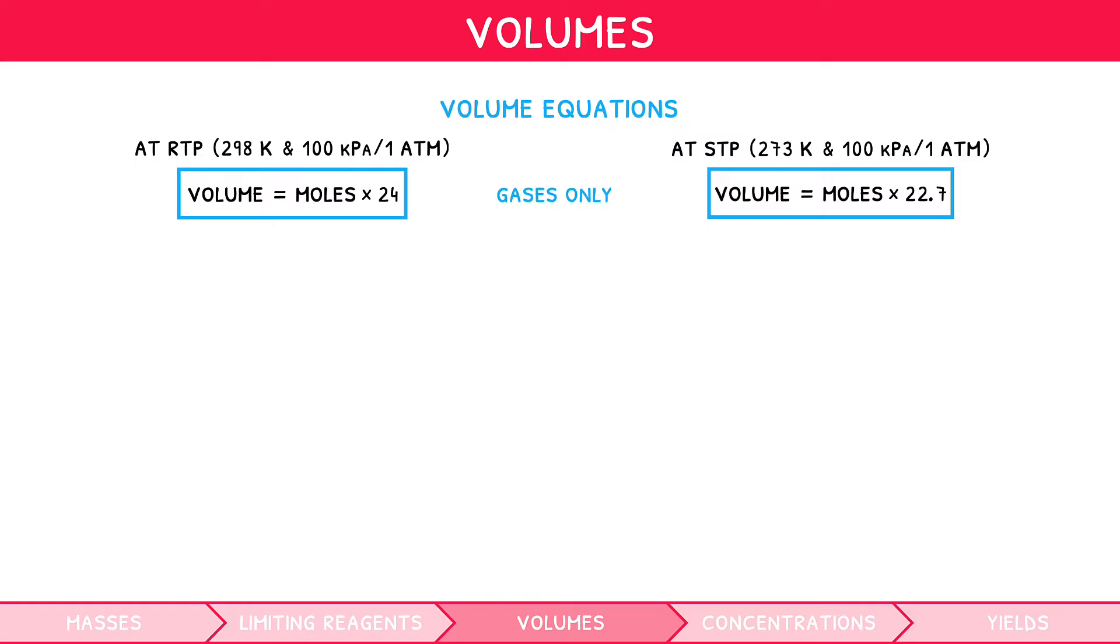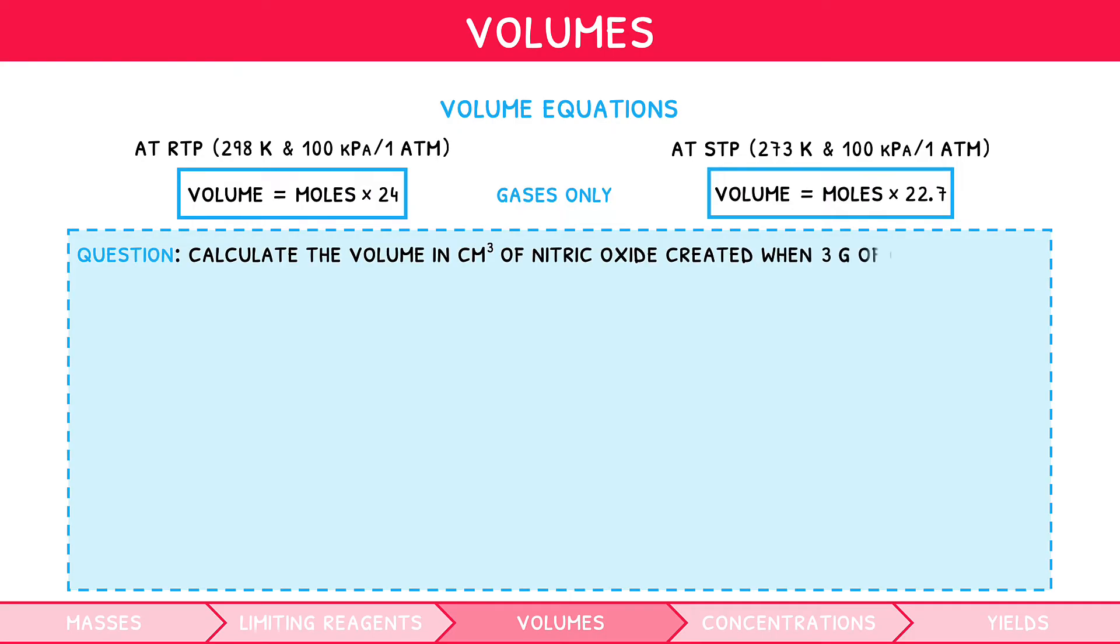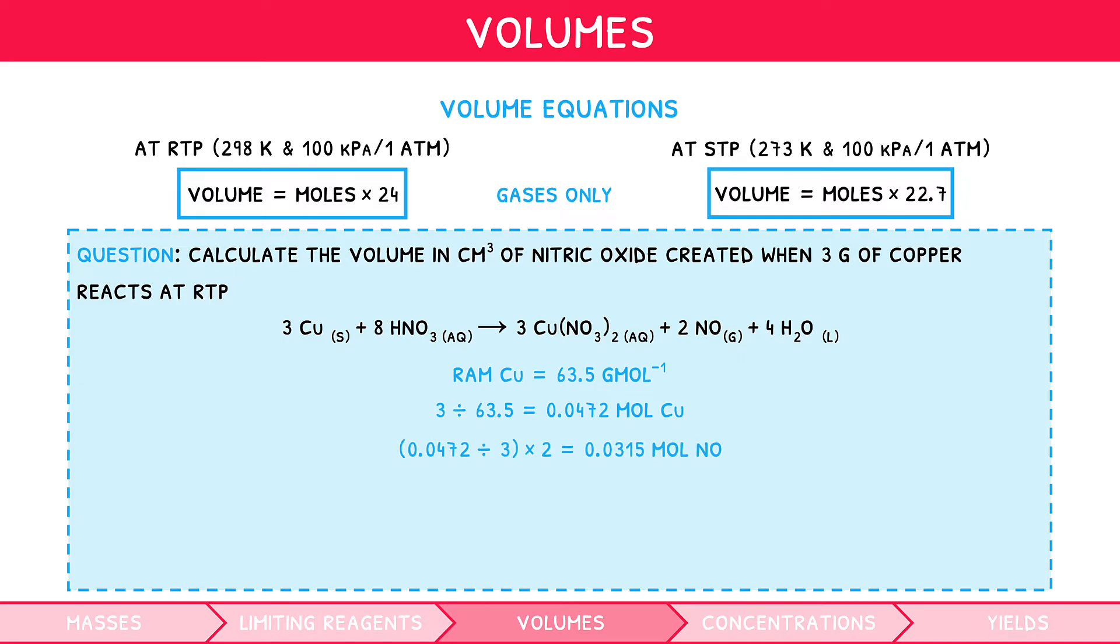Let's take the same equation we used previously, but this time the question states, calculate the volume in centimetres cubed of nitric oxide created when 3 grams of copper reacts at RTP. The question is only giving us a single reagent, so we can assume that the copper is limiting in this reaction. The moles of copper can be calculated using the formula mass divided by RAM. This can then be divided by 3 and times by 2 to give the moles of nitric oxide. Given that the question stated this reaction occurred at RTP, we will then times its value by 24 to give the volume of nitric oxide in DM cubed. We can then multiply by 1000 to get the value in CM cubed. If the question had instead stated that the reaction occurred at STP, we would simply times the value of moles that we had by 22.7. The process is exactly the same.